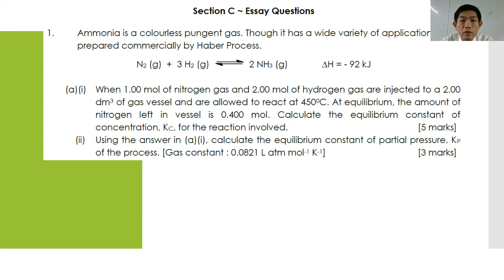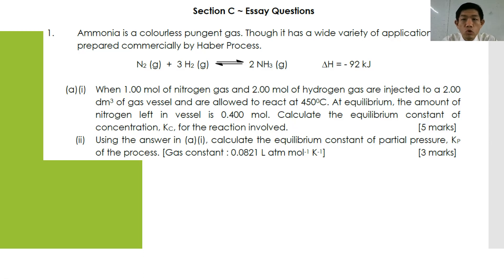Calculate the equilibrium constant Kc for the reaction, and use the answer in A1 to calculate the equilibrium constant Kp. The gas constant R is 0.0821 L atm mol⁻¹ K⁻¹. If you notice carefully, all the values given here indicate that you should give your final answer to three significant figures. Please take notes on all the values given during examinations. Let's have a look at how to solve this question.